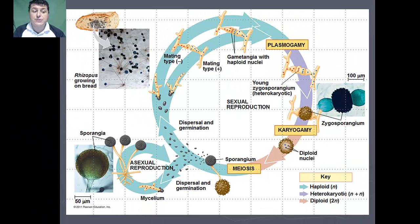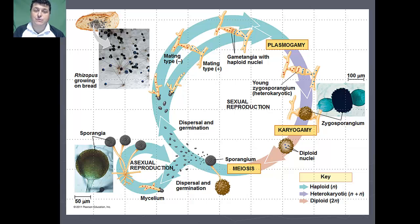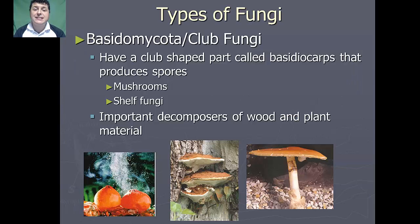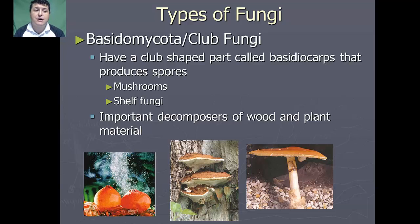Those same spores can undergo asexual reproduction, where the mycelium themselves can generate reproductive structures called sporangia, producing spores that produce new mycelium. Our next type of fungi is going to be our basidiomycota, or club fungi. These fungi have club-shaped structures called basidiocarps that produce spores. Examples of these would be mushrooms and shelf fungi.